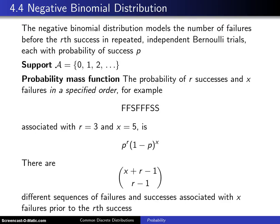So far three discrete distributions have been introduced. The first was the Bernoulli distribution, which had the outcomes 0 and 1. That led to the binomial distribution. Finally, we just finished the geometric distribution, which models the number of failures before the first success in repeated independent Bernoulli trials, each with a probability of success p.